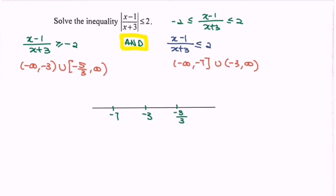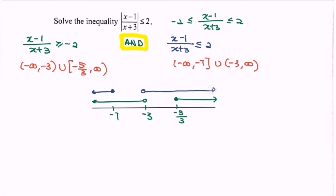We have two levels. For the left hand side interval: negative infinity until negative 3 where negative 3 is not included, and negative 5 over 3 until infinity with a filled circle. For the right hand side interval: negative infinity until negative 7 with a filled circle, and negative 3 until infinity. Since we have the intersection, we shade the overlapping region.